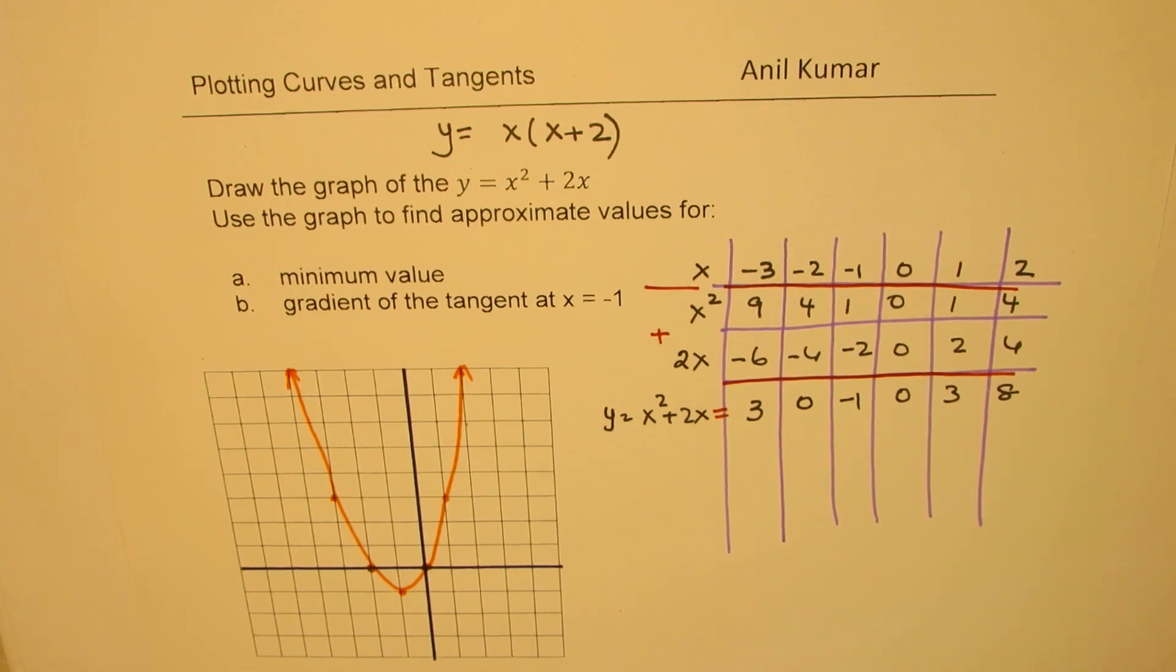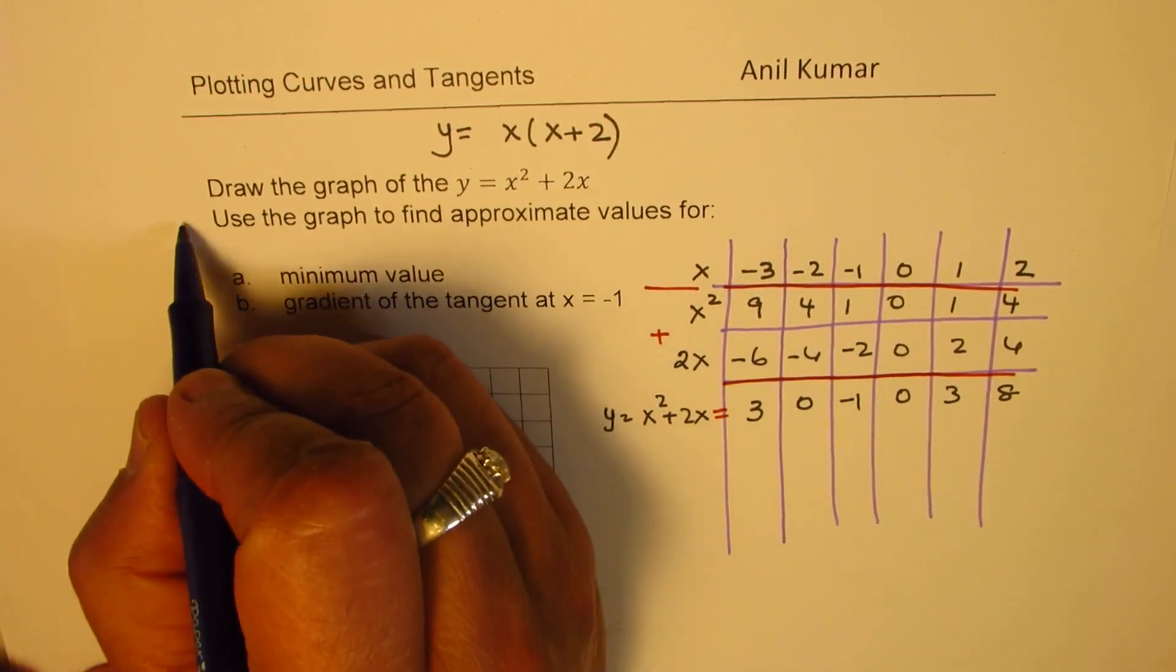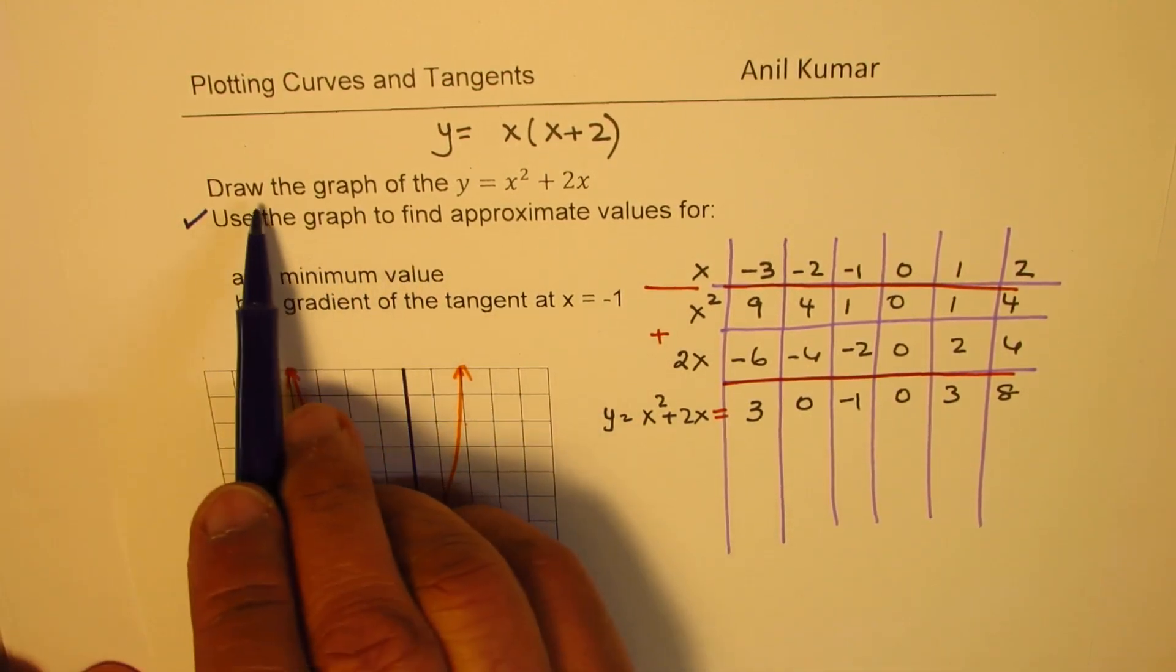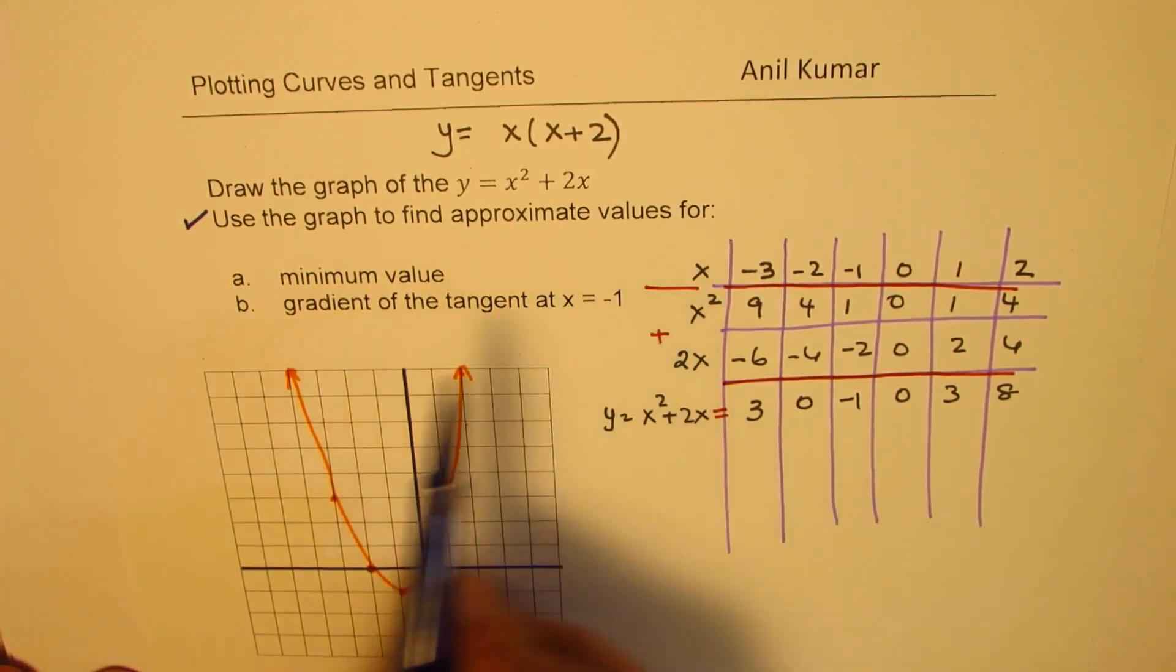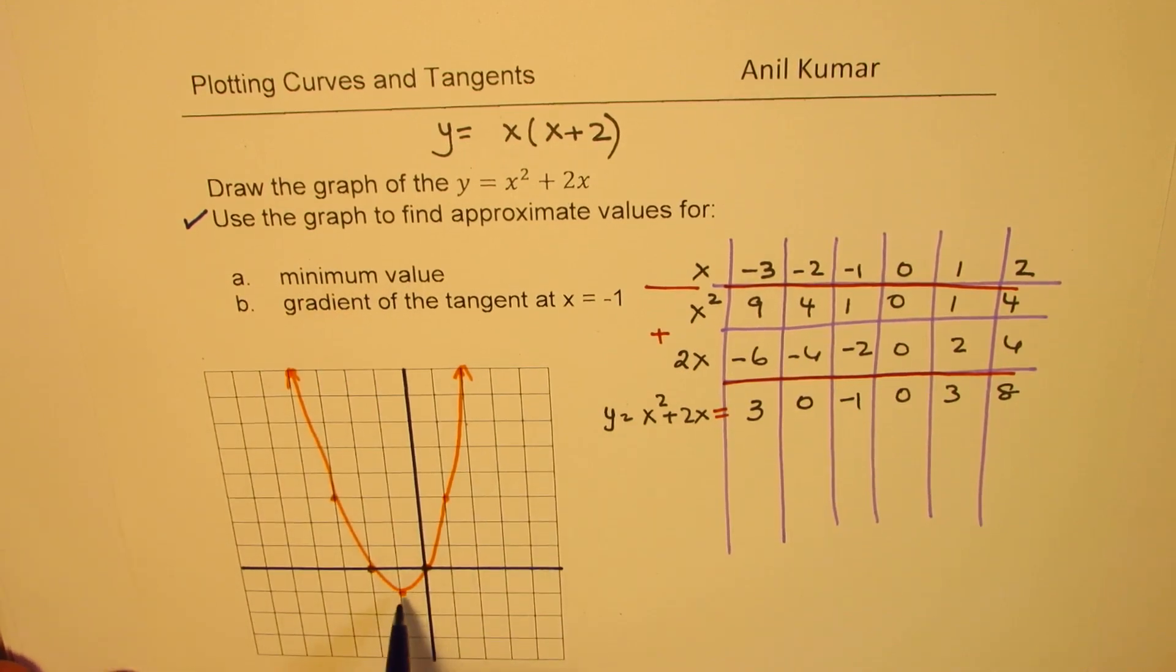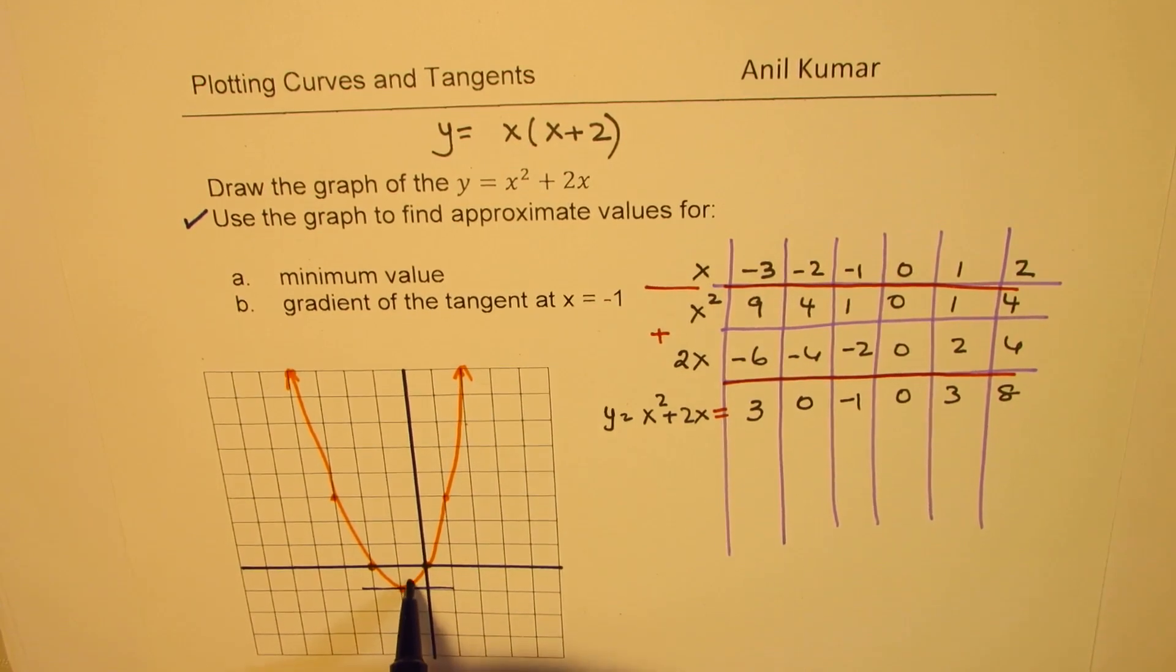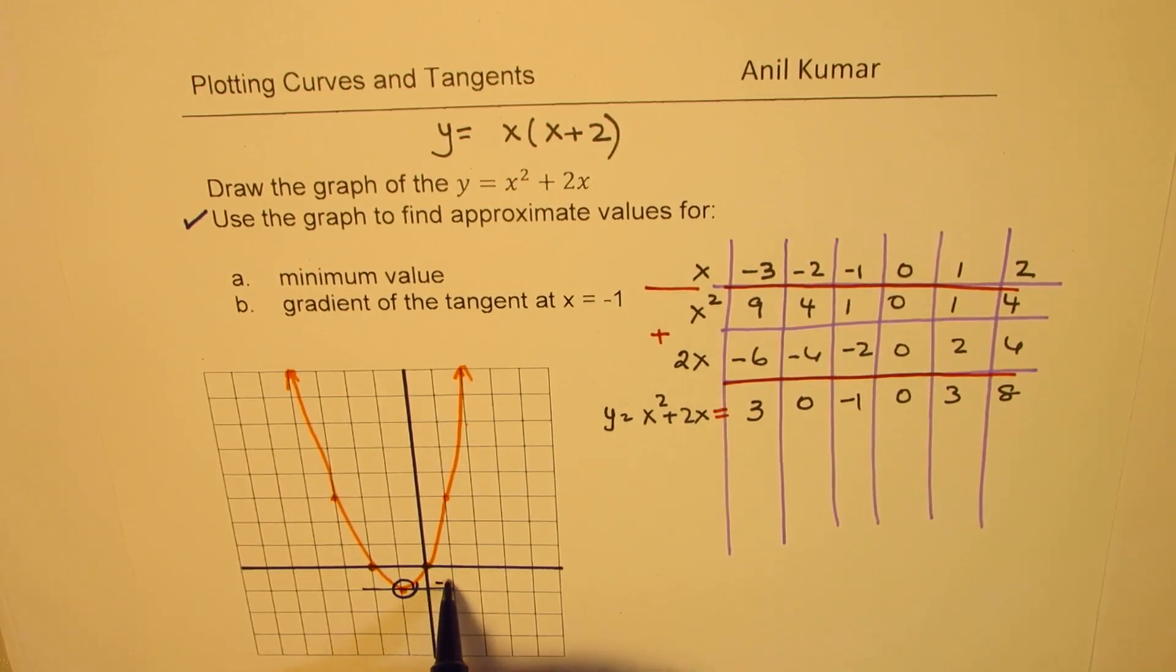Perfect. So that is how we should be doing it. And now, so we've done part 1, which is to draw the graph of this curve. And now, we need to use the graph to find approximate values for minimum value. So as you can see here, the minimum value is between two x-intercepts. Right there, we have a horizontal tangent.